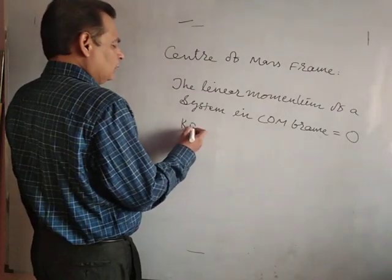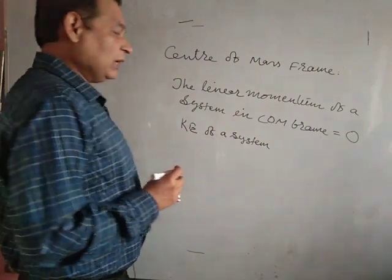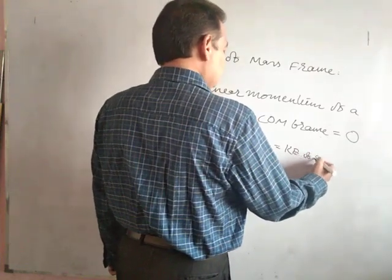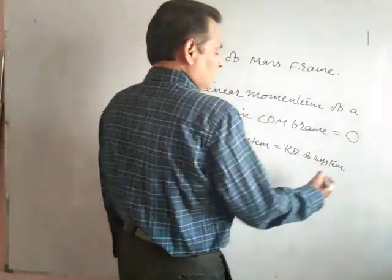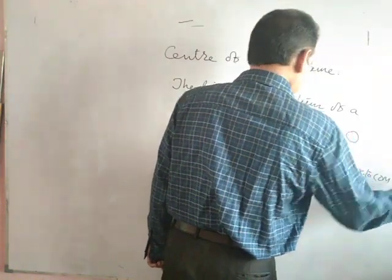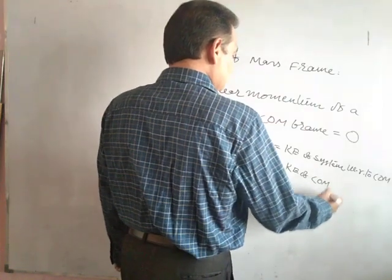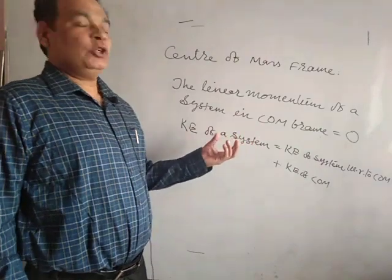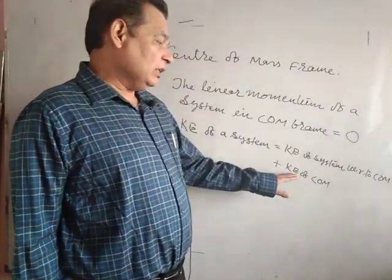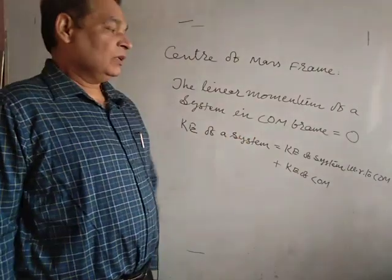The kinetic energy of a system can be written as: kinetic energy of the system with respect to the center of mass frame, plus kinetic energy of the center of mass. We can write down the total kinetic energy of the system in these two parts. The summation of these two gives you the kinetic energy of the entire system.